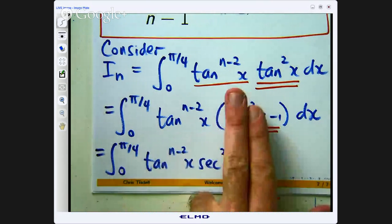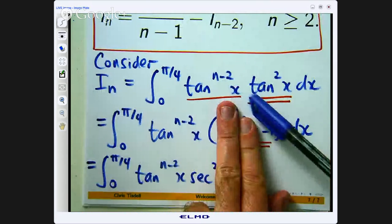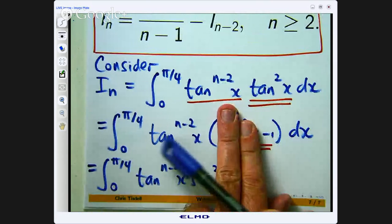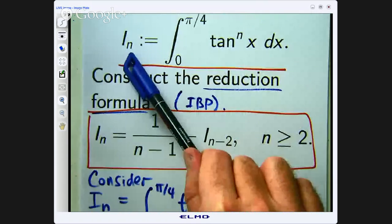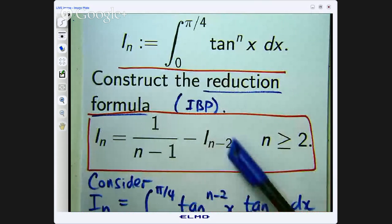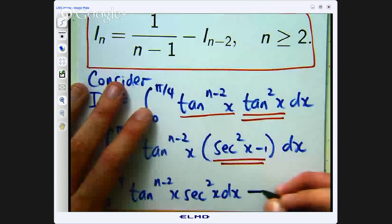So that takes care of that. When I expand it out I get minus integral tan to the n minus 2, that is just this with n replaced by n minus 2. I am just going to write that down to save space.